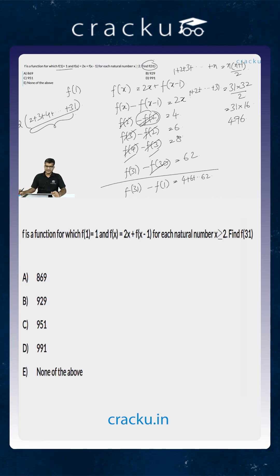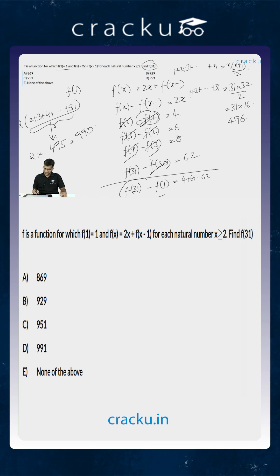But looking at this sum, we have the sum from 2, 3, 4 — there is no 1 in it. So the value of this sum will be 495. Two times 495 is 990. Therefore, the value of f(31) minus f(1) is equal to 990. We know that f(1) is equal to 1, so the value of f(31) will be equal to 991, which is option D.